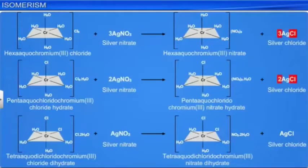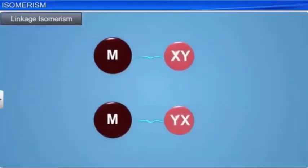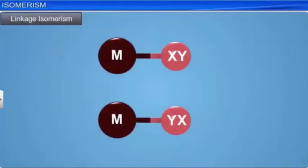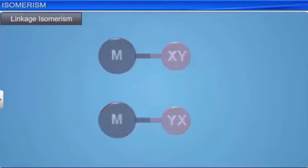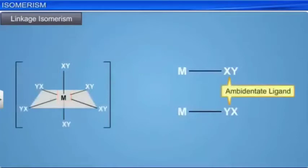The other type of structural isomerism is linkage isomerism. Linkage isomerism arises when a ligand can bind to a metal ion through any one of two or more different donor atoms. Thus, this type of isomerism is seen in coordination compounds that have ambidentate ligands. For example, in the ambidentate nitrite ion, either nitrogen or oxygen atoms could act as the electron pair donors, and there is a possibility of isomerism.